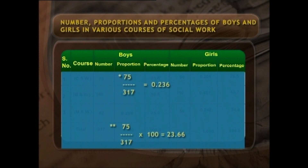To clarify how we obtained the proportion 0.236 for boys: we divided 75 by 317 (the total number of boys) to get 0.236. Similarly, the percentage is (75/317) × 100 = 23.66%. Conventionally, percentages are calculated up to the nearest decimal and adjustments are made in the last digits so the totals are exactly 100.